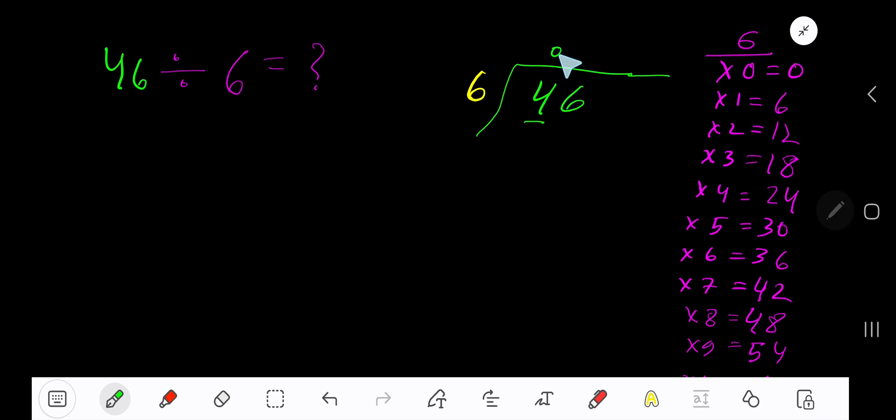0 times 6 gives you 0. Subtract, you are getting just 4. Bring down the next digit. 6 goes into 46 how many times? 8 times 48, which is greater, so 7 times. 7 times 6 is 42.